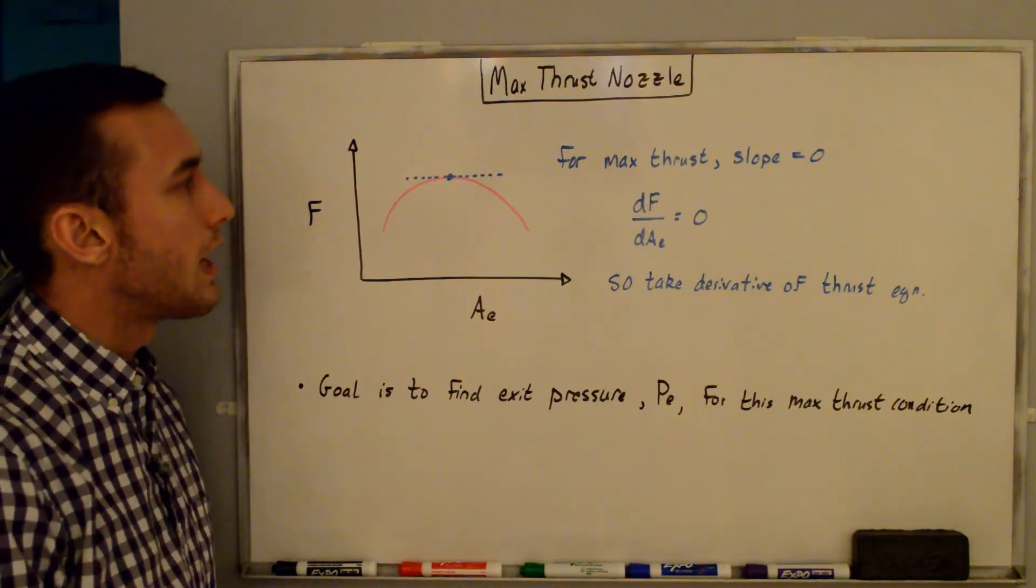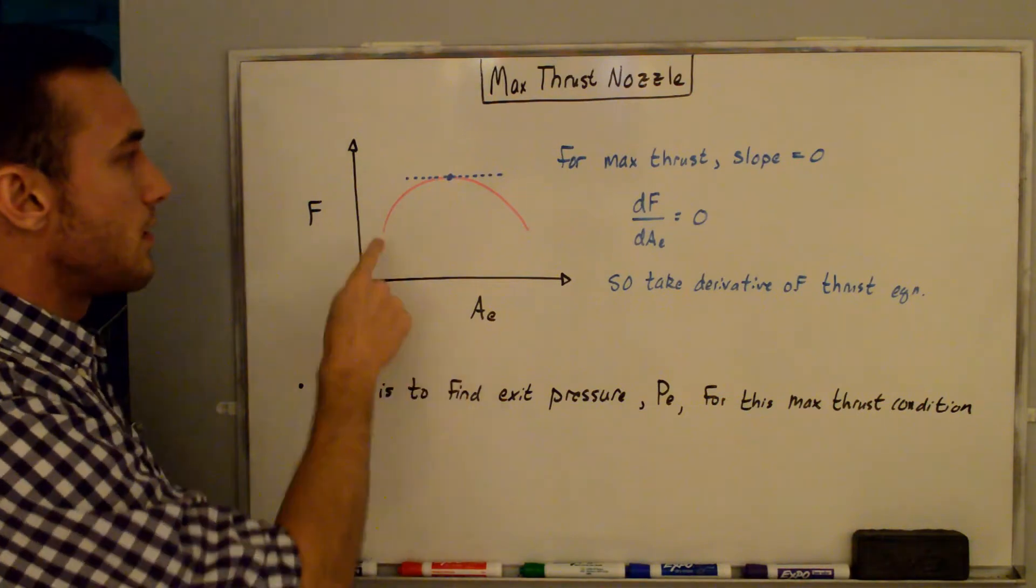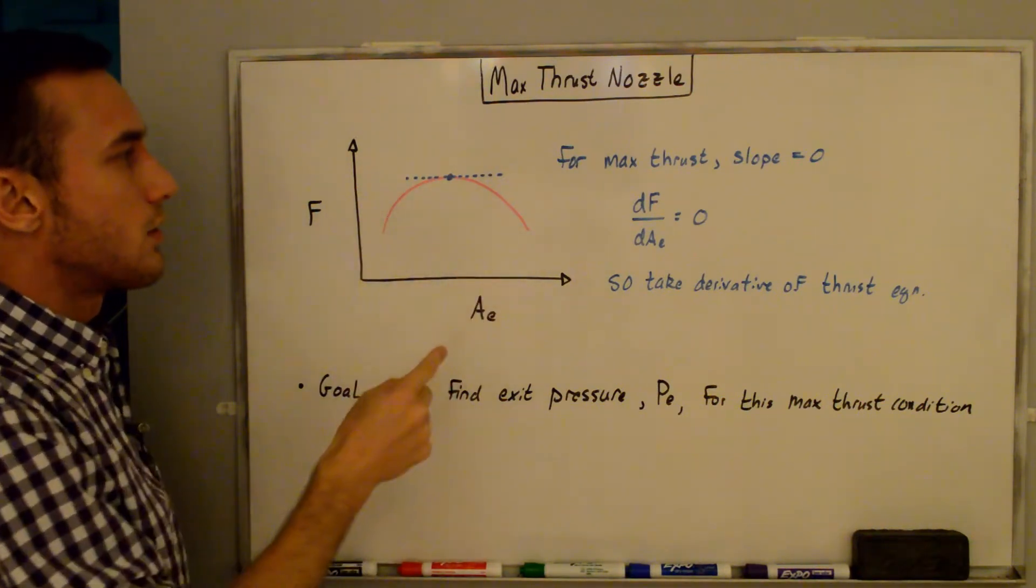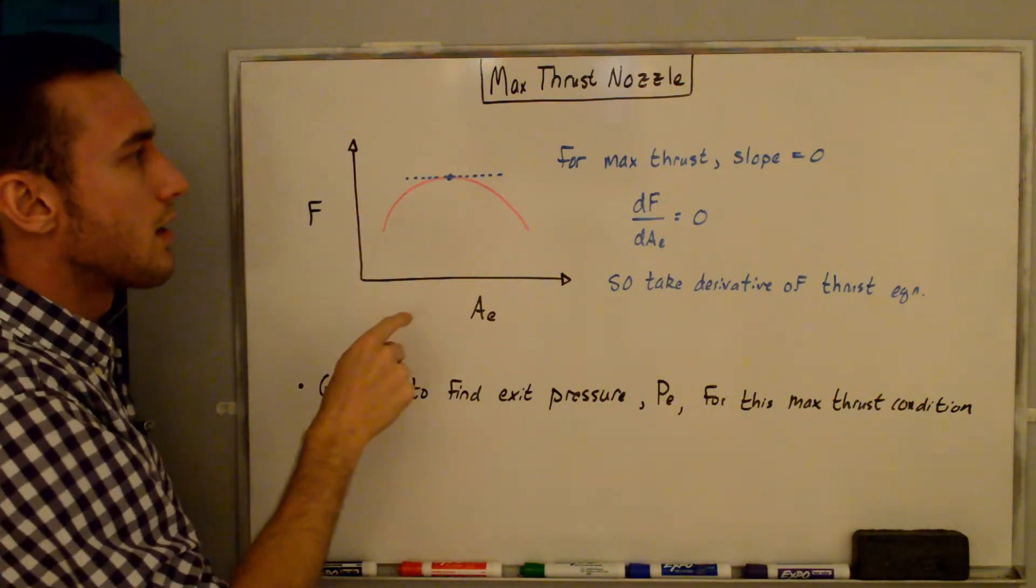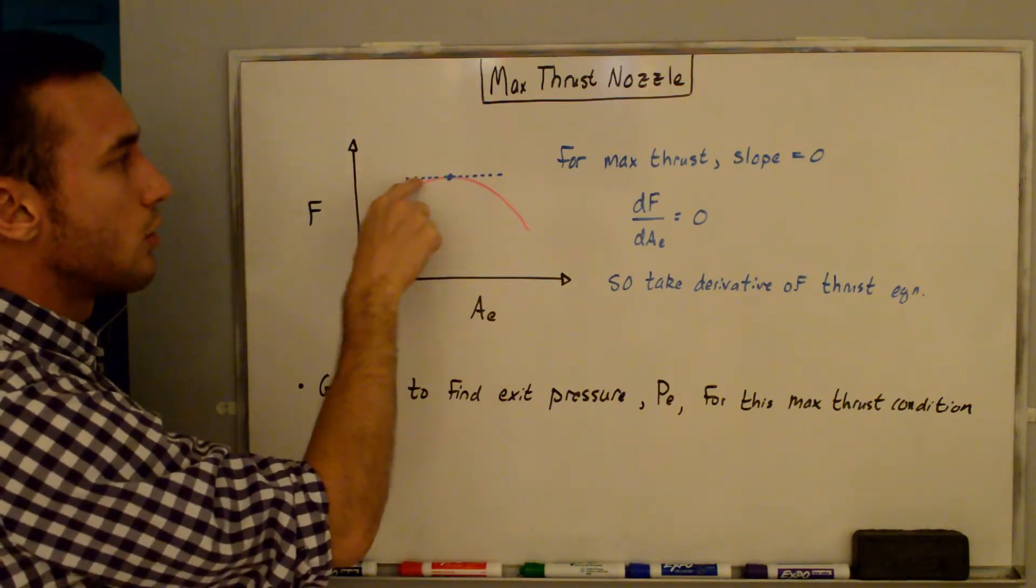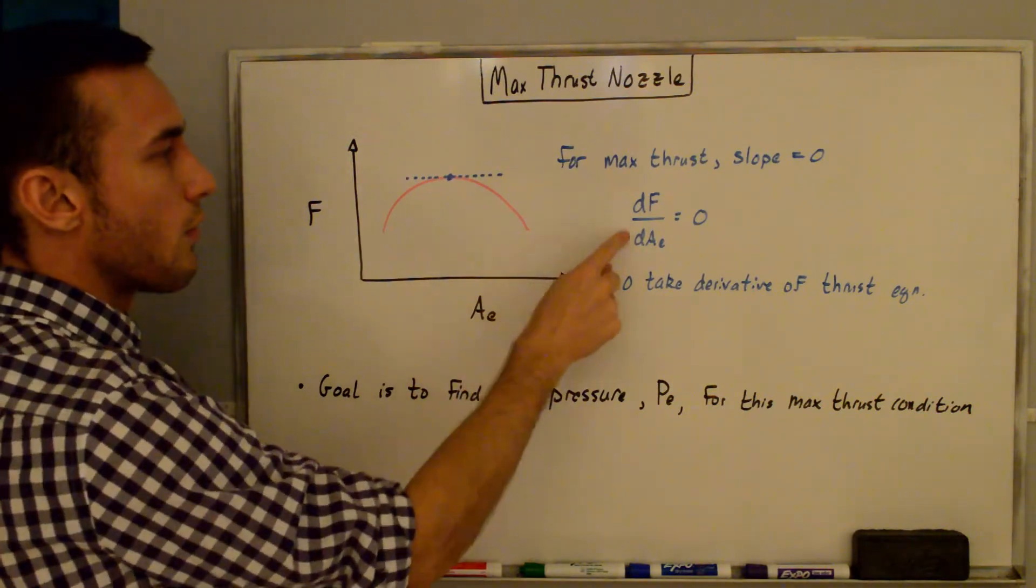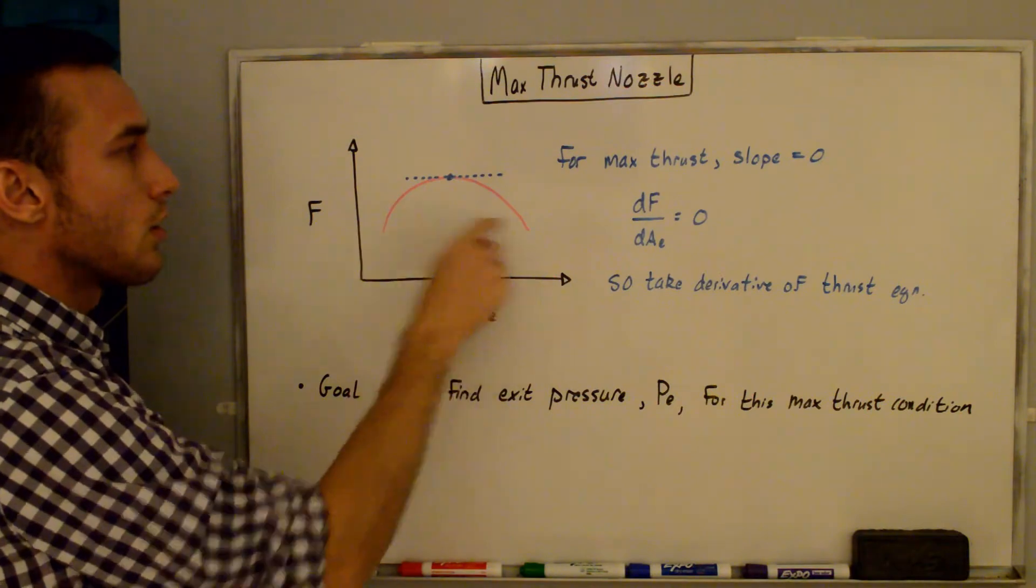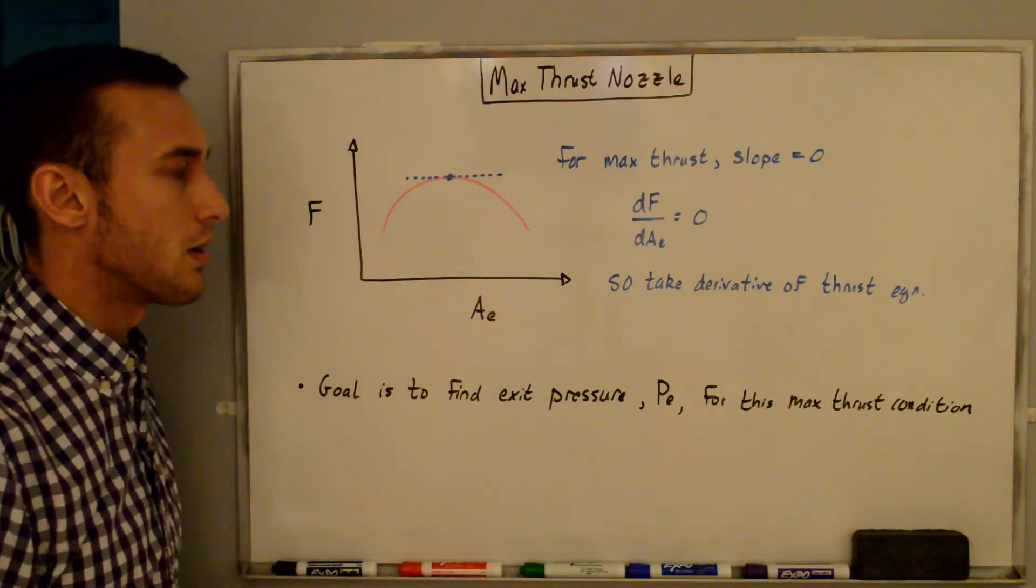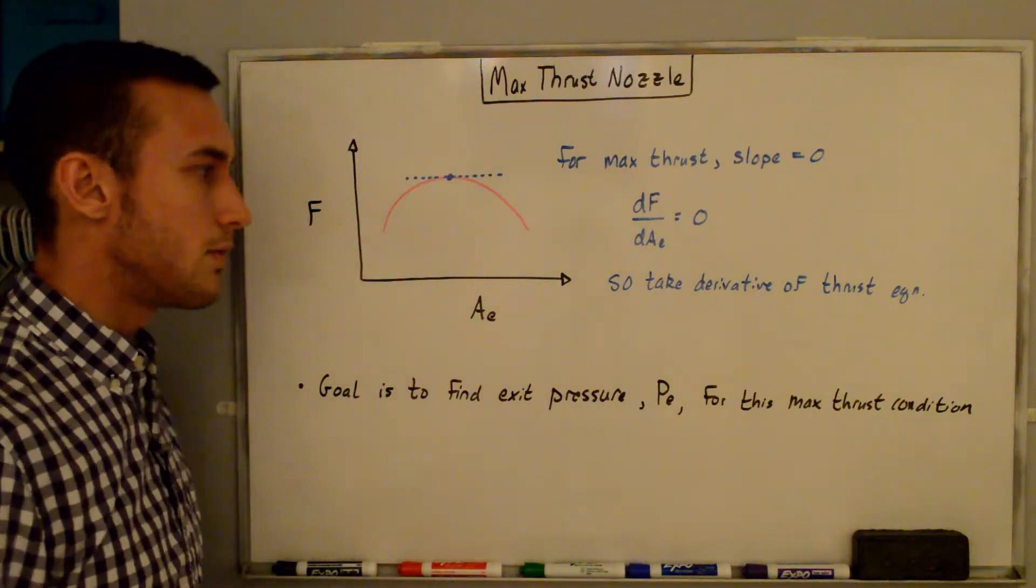So here I've just drawn a qualitative plot of the thrust F versus the exit area AE, and you can see that's the red curve here. And so for the maximum thrust, so the highest value on this plot, you can see that occurs at the top here where the slope is equal to zero, and that's expressed mathematically as dF/dAE = 0. So the derivative of this curve is equal to zero is where we get the maximum thrust. So what we're going to do is take the derivative of the thrust equation F that we had on the previous whiteboard, and the goal is to find the exit pressure pE, which is in that equation for this max thrust condition.